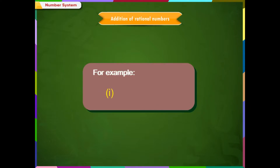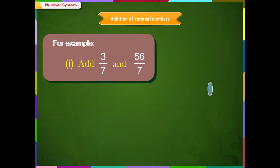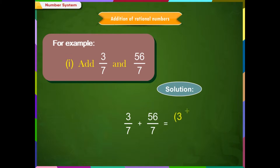For example, Example 1: Add 3/7 and 56/7. Solution: 3/7 + 56/7 = 59/7. Since 3 + 56 = 59, therefore 3/7 + 56/7 = 59/7.